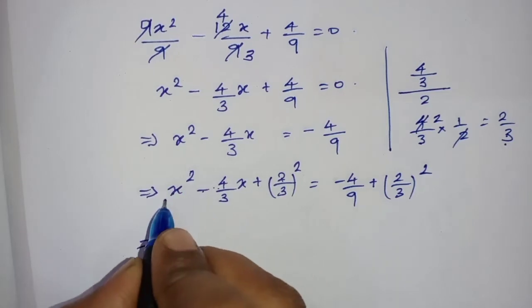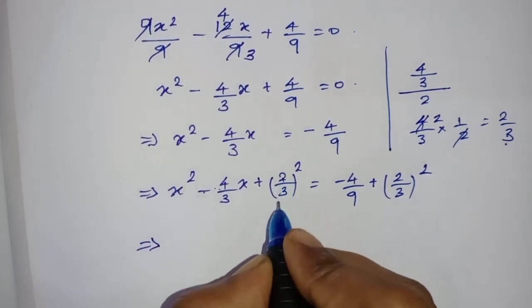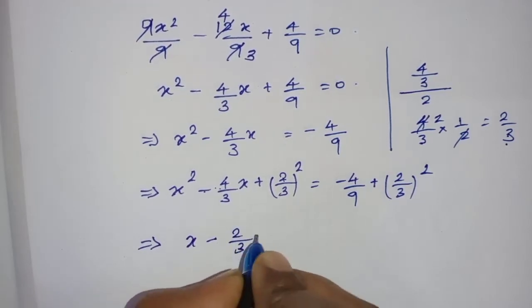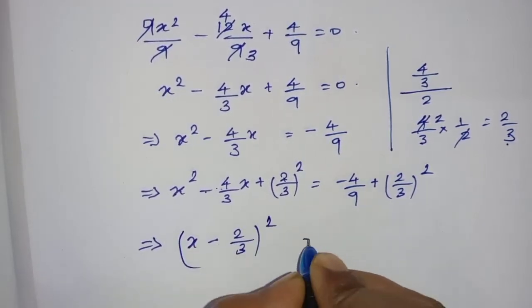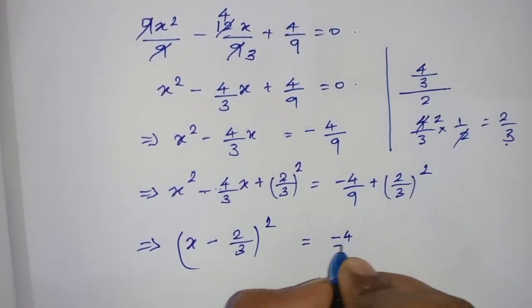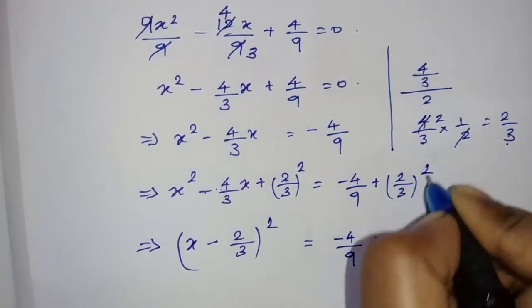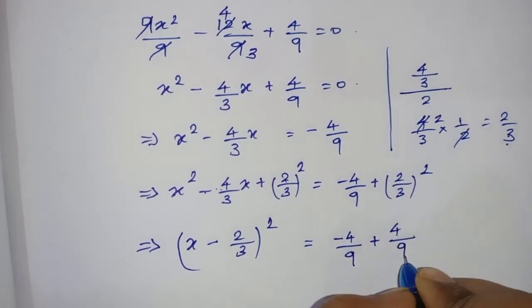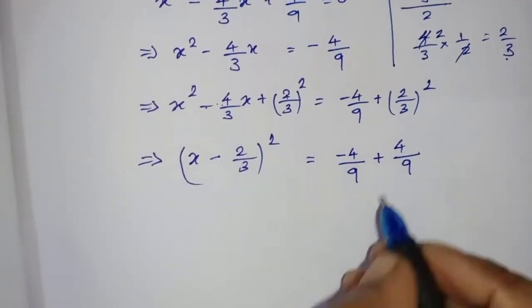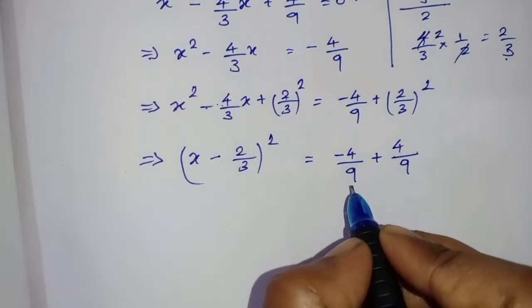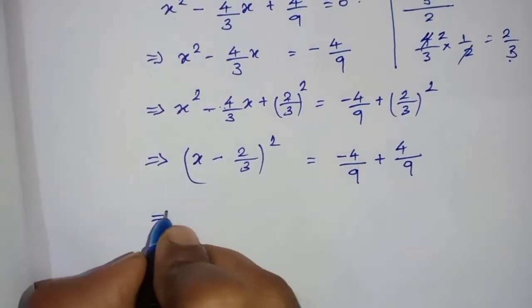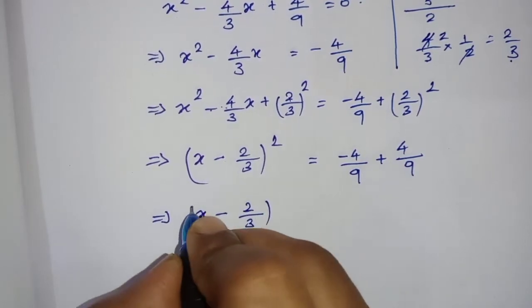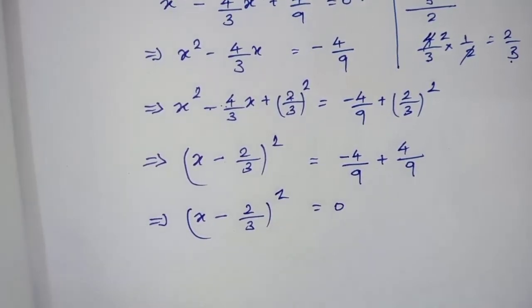Here a is x and b is 2/3, so we get (x minus 2/3)². Simplifying the right side: minus 4/9 plus (2/3)² gives minus 4/9 plus 4/9, which equals zero. So we have (x minus 2/3)² equal to zero.